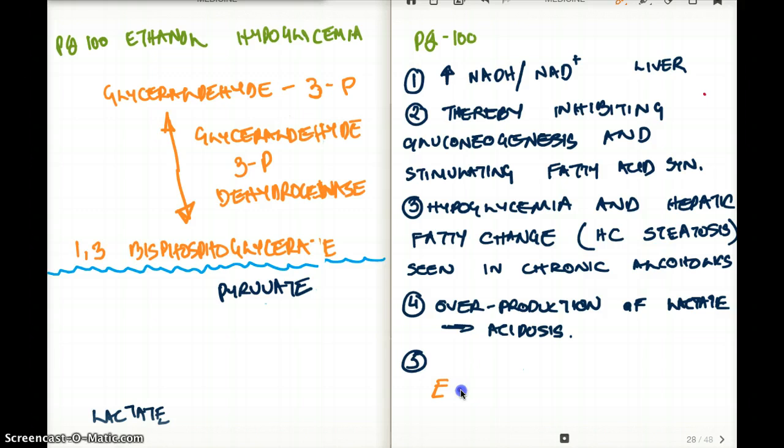It's broken down to acetaldehyde by using the enzyme alcohol dehydrogenase. From acetaldehyde it's broken down to acetate using the enzyme acetaldehyde dehydrogenase. Now acetaldehyde can shuttle into glyceraldehyde and glyceraldehyde 3-phosphate is a byproduct of glycolysis.